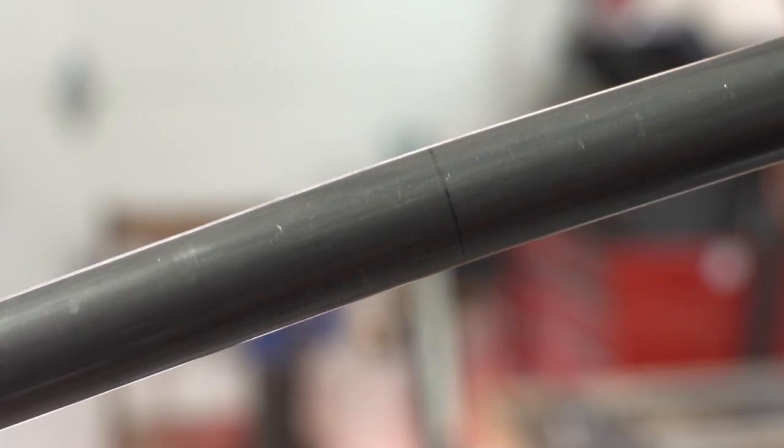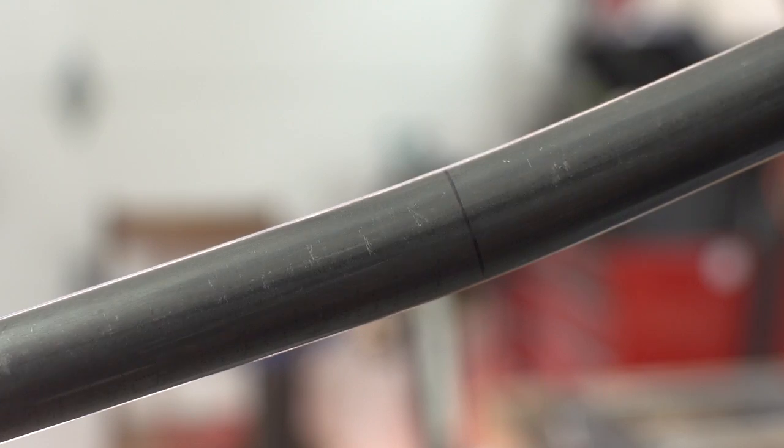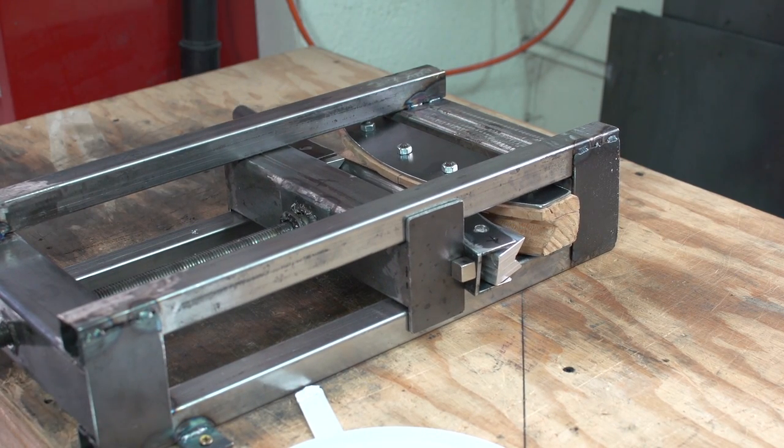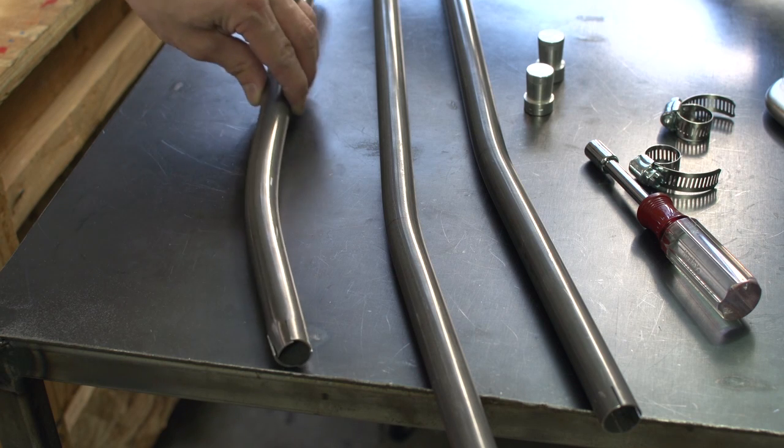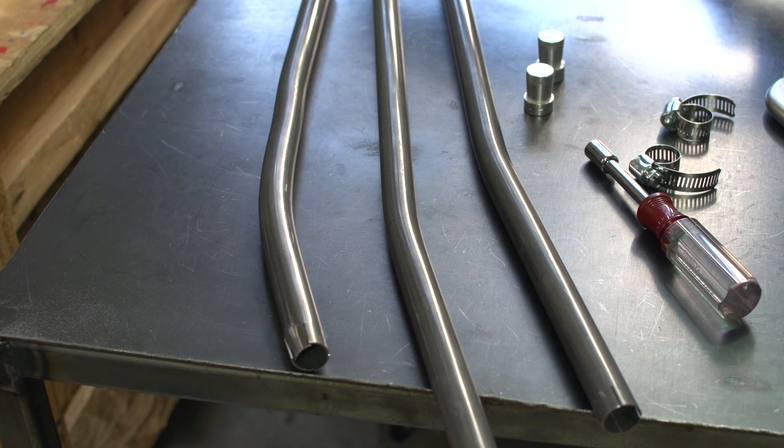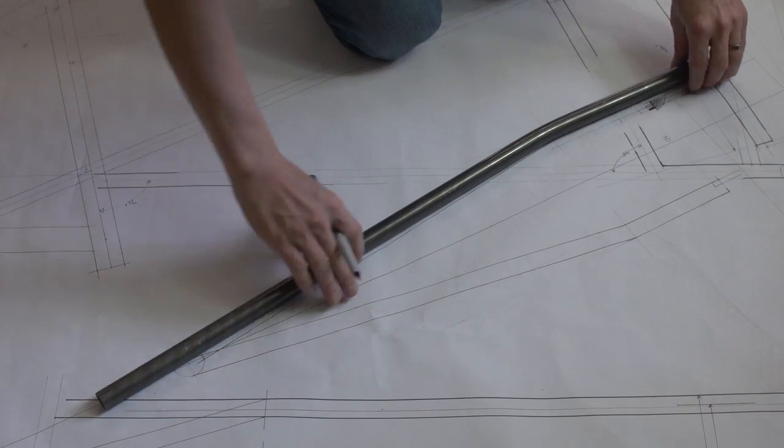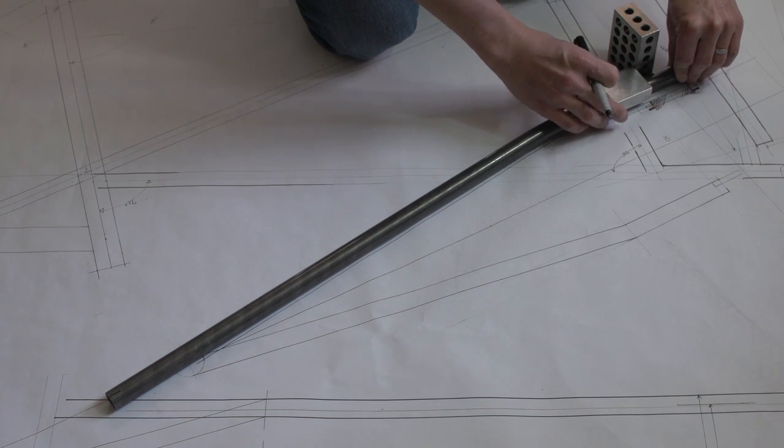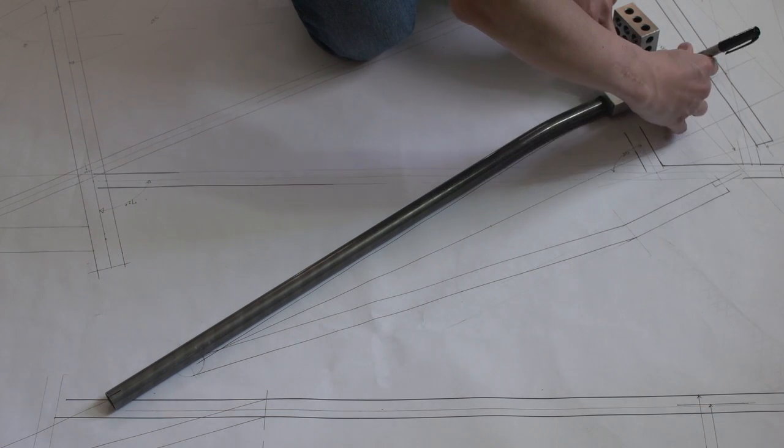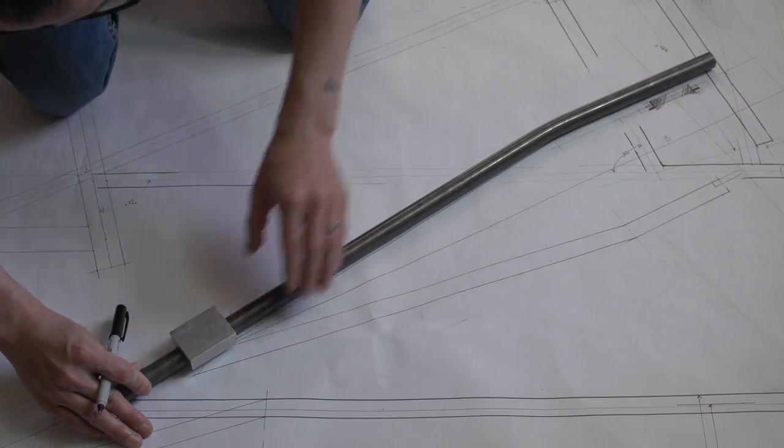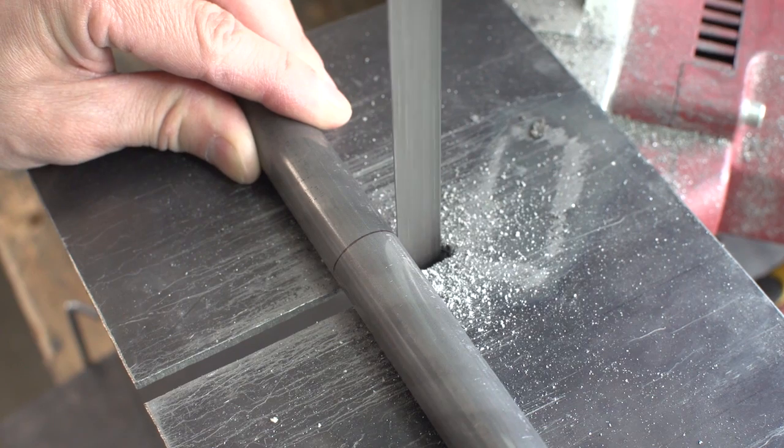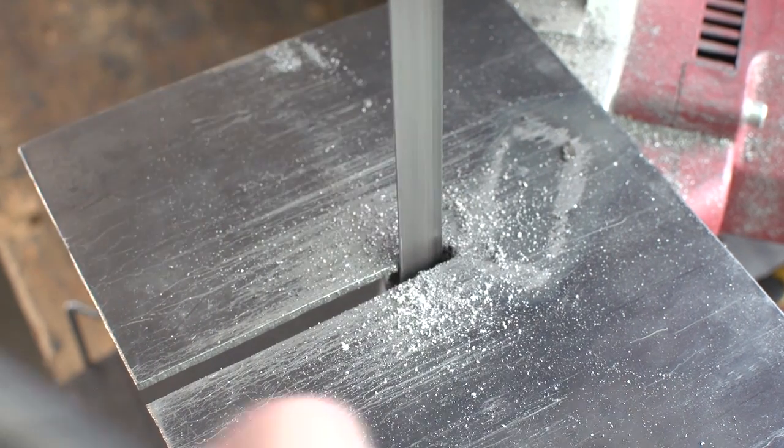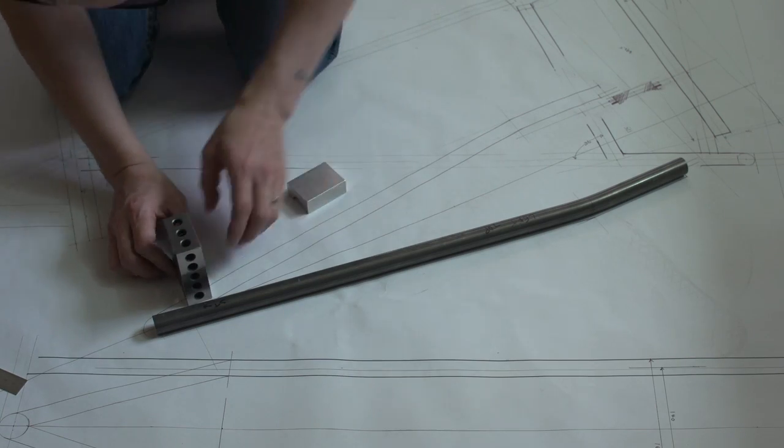Alright, that came out pretty good. But out of curiosity, I threw this scrap piece into the bender with no sand in it, and it still bent without a problem. I do, however, think that if the tube was of larger diameter, I would have had a problem. But this tube is a three-quarter inch tube and the bend was not that extreme. So yeah, I guess I didn't need the sand.